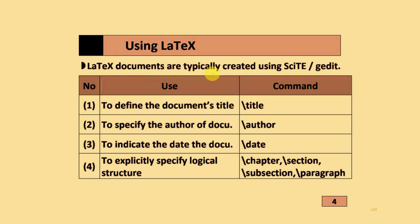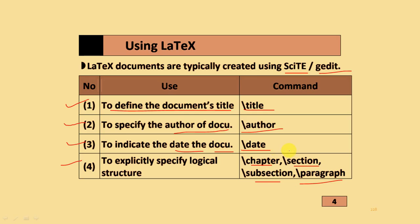LaTeX documents are typically created using the Kile text editor or gedit. Some commonly used commands: to define the document title we use \title; to specify the author we use \author; to indicate the date we use \date. And for logical structures we add sections, subsections, and paragraphs using the corresponding commands.